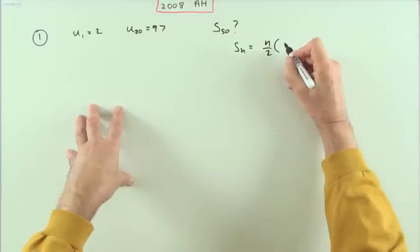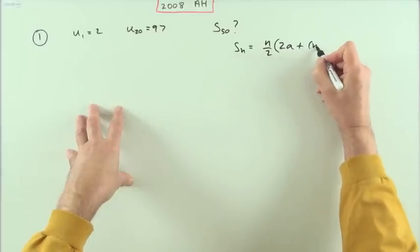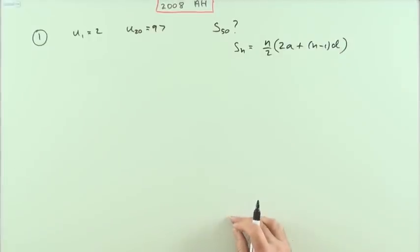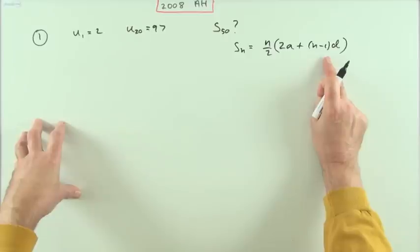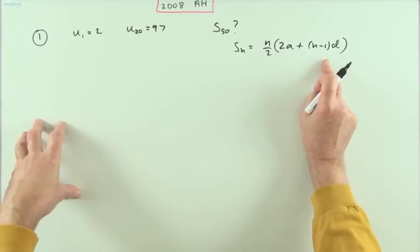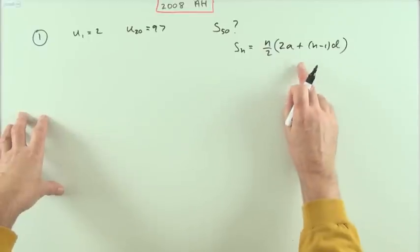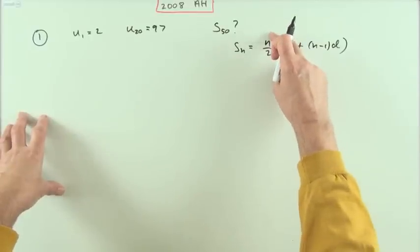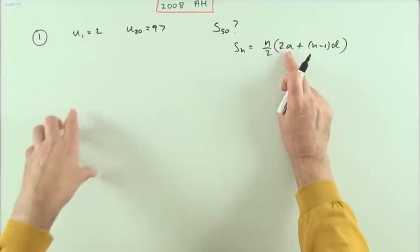If you don't remember it, the last term is a plus n minus 1 times d, which I'm just going to use here. In order to use that, I need to know how many terms there are - got it, 50. What's the first term? Got it, 2.